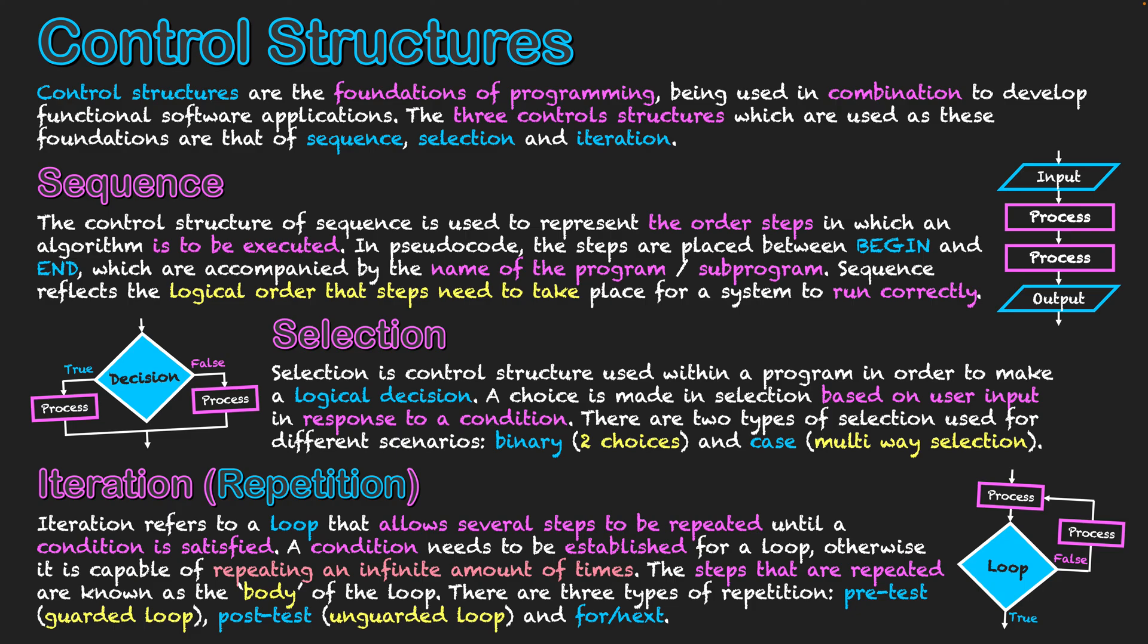Then there's also a post-test loop, where you have to do the steps within, some of the steps within the loop at least once, and you go through it, and then it tests the condition at the end to see if the criteria is being met. And then you can potentially exit. If not, you're going to be looped back to the previous steps and have to do them again.